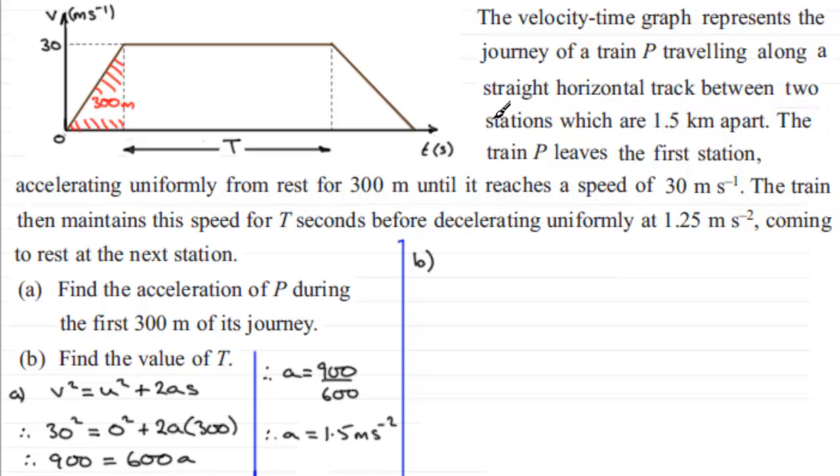What I know is that we're told that the train decelerated uniformly at 1.25 metres per second per second. So in other words, the acceleration over this stretch here, A, is going to be negative, because it's decelerating, negative 1.25 metres per second per second. So what I've got here is U, our initial velocity, 30. I've got our final velocity V which is 0, and I've got our acceleration minus 1.25. I just want to get S, that would be the distance it covered during this section here. So again, what we'd use is V squared equals U squared plus 2AS.